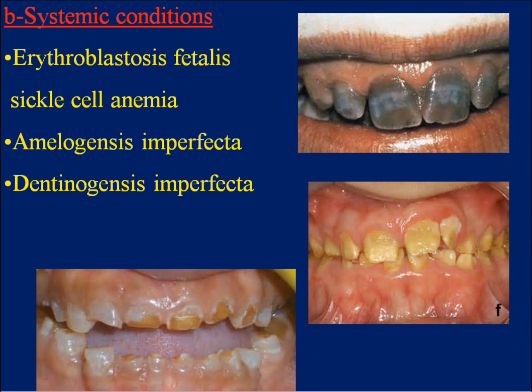B. Systemic conditions. Erythroblastosis fetalis: it occurs due to RH incompatibility in newborn babies. Large amounts of hemosiderin pigments are released and discolor the dentine; stain is usually green, brown, or blue. Sickle cell anemia is an inherited blood dyscrasia similar to erythroblastosis fetalis but more severe. Amelogenesis imperfecta causes yellow to brown discoloration. Dentinogenesis imperfecta causes brown, yellow, or gray discoloration, which should be treated by restorative procedures such as composite build-up or crowns.